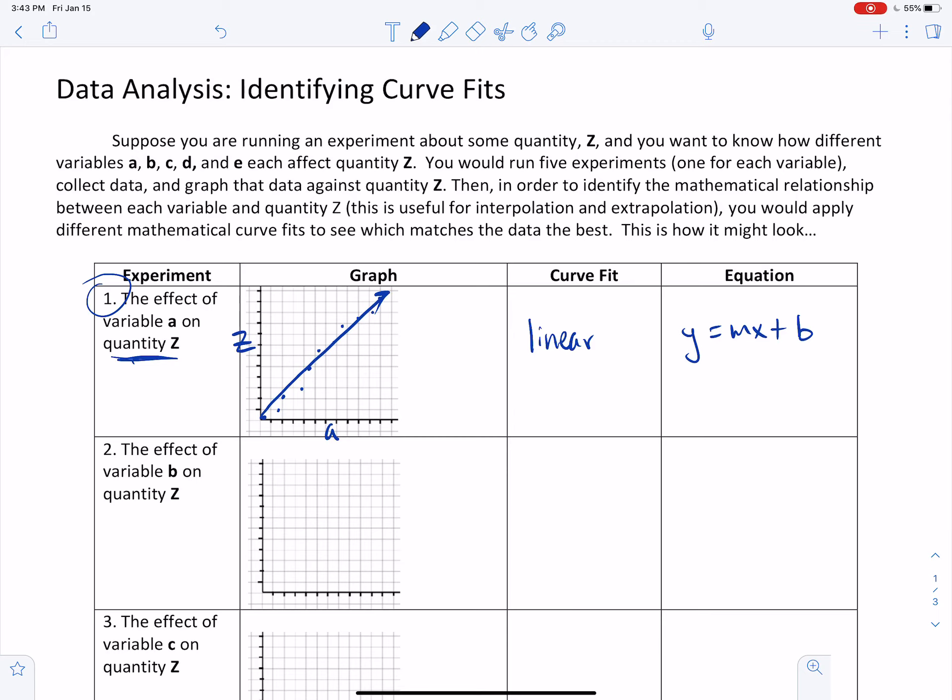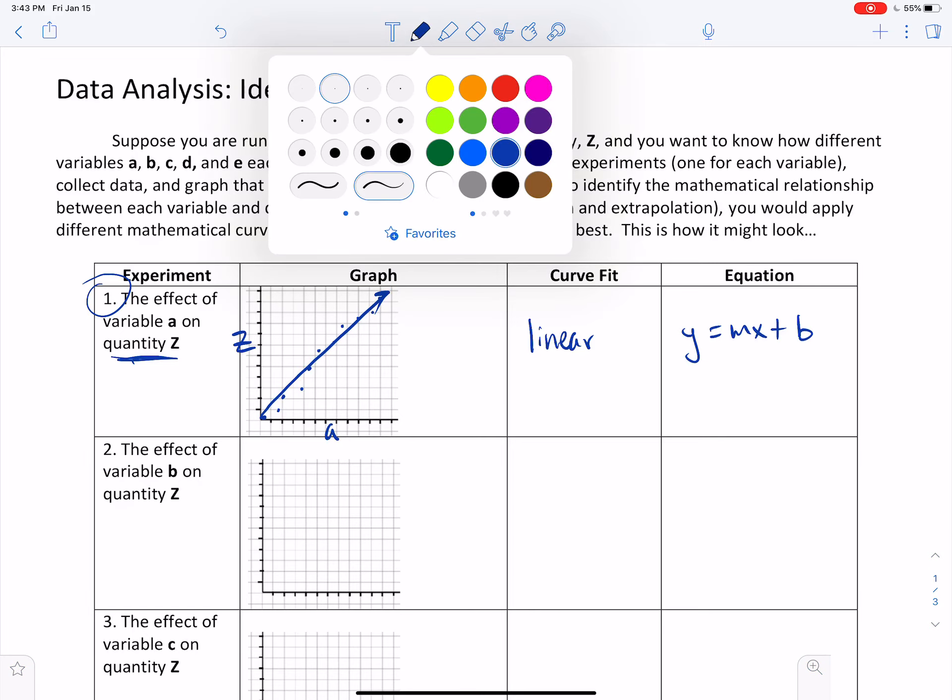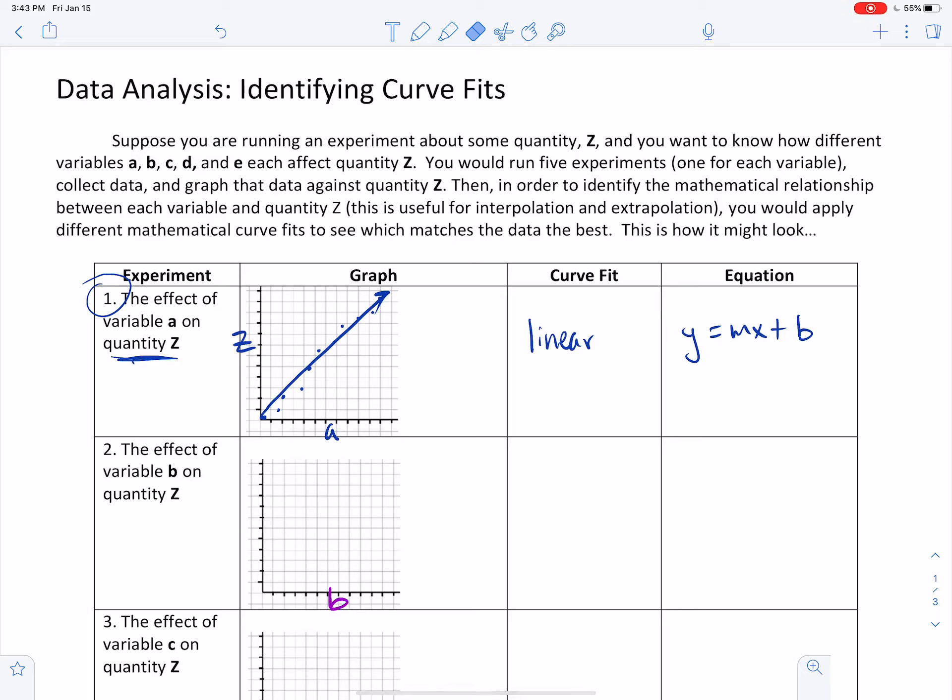Let's say you moved to the next variable, variable B, and now you're going to measure the effect of variable B. Let's say variable B, something different, but you're still going to measure its effect on quantity Z. Well, now you notice that as you increase B, you see something more like this. And again, maybe there's a little bit of wobble in that data, but in general it's kind of doing something like this. It's curving. Well, this is what a quadratic relationship looks like. And it has the equation y equals ax squared plus bx plus c, or it could be simplified to just y equals ax squared.